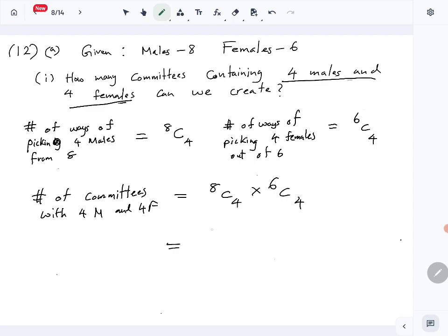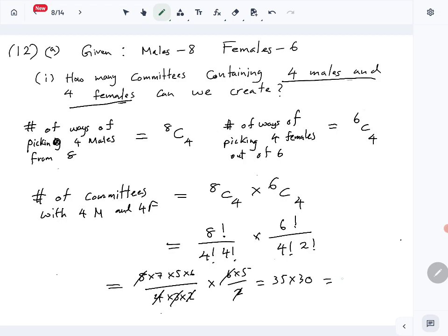So 8C4 equals 8 factorial over 4 factorial times 4 factorial, times 6 factorial over 4 factorial times 2 factorial. Simplifying: 8 times 7 times 6 times 5 over 4 times 3 times 2, times 6 times 5 over 2, which equals 70 times 15, equals 1050. There are 1050 ways of creating committees with 4 females and 4 males.